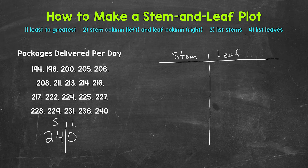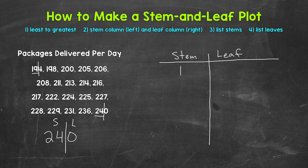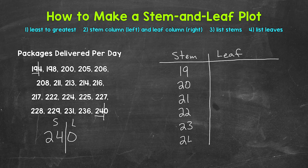Let's look at our lowest value and highest value: 194 and 240. For 194, we split this value here, so our lowest stem is 19. For 240, we split this value here, so our highest stem is 24. Now we can list our stems. We start at 19, then 20, 21, 22, 23, and 24 — covering the 190s, 200s, 210s, 220s, 230s, and 240s. We went from our lowest stem of 19 to the highest stem of 24 and included everything in between.